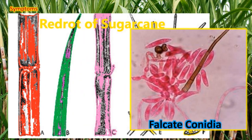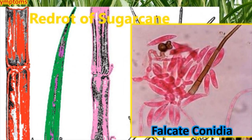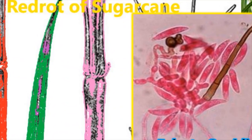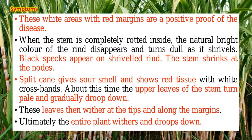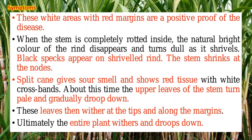In this image, you are seeing the falcate, sickle-shaped conidia. White areas on the leaves and stem with red margins are positive proof of the disease. Sometimes the entire plant shrivels, black specks appear on the shriveled rind, and the stem shrinks at the nodal region. When you cut the cane and split it vertically, you get a characteristic asthma-like smell due to the presence of this fungus, and the stem internally appears red in color.